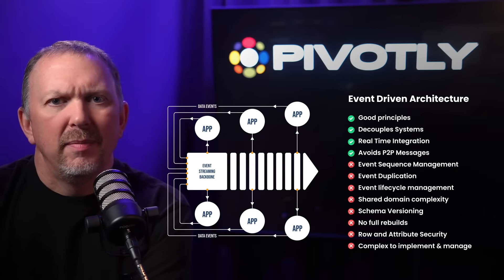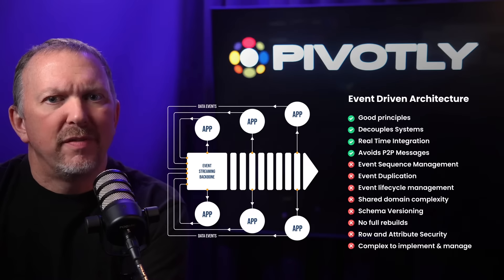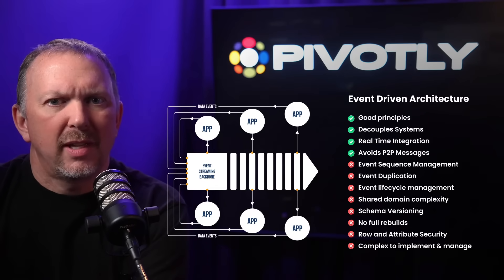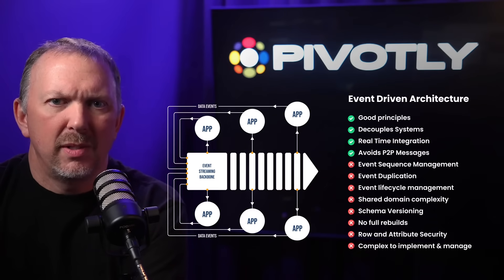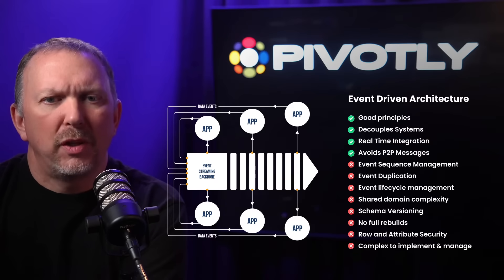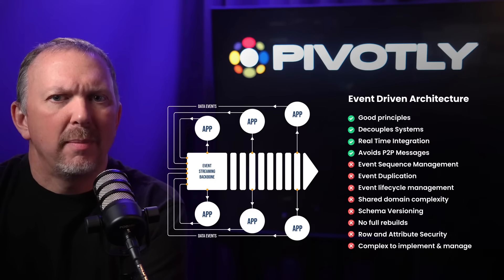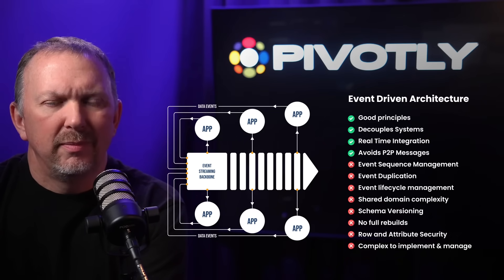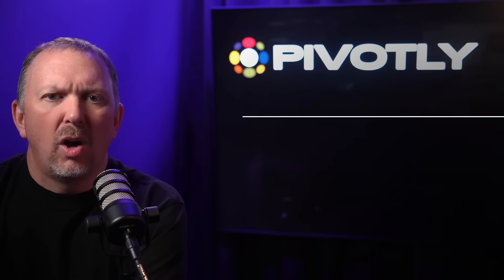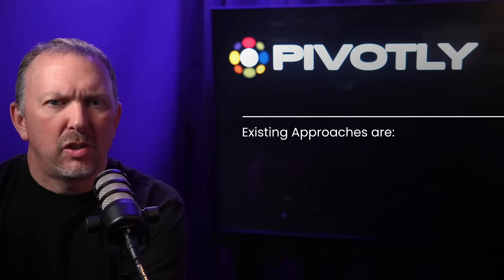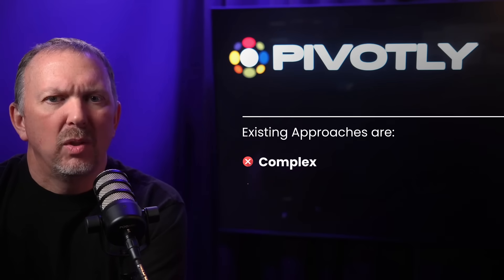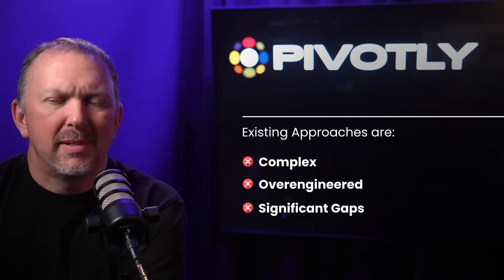Later, the data mesh concept — enabled by event-driven architectures like Kafka — was created in part to address these issues. That approach has strong foundational principles, but introduced new challenges like event management and schema evolution. Bottom line, all of these architectures are complex, over-engineered, and have gaps.